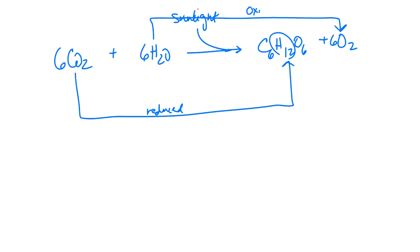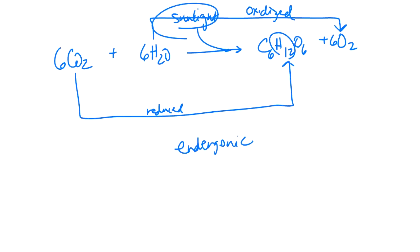Something we mentioned previously in the semester was endergonic and exergonic reactions. Photosynthesis would be an endergonic reaction because it requires an input of energy — an input of sunlight. Cellular respiration, by contrast, would be an exergonic reaction because we get a release of energy — we're producing ATP through that process.